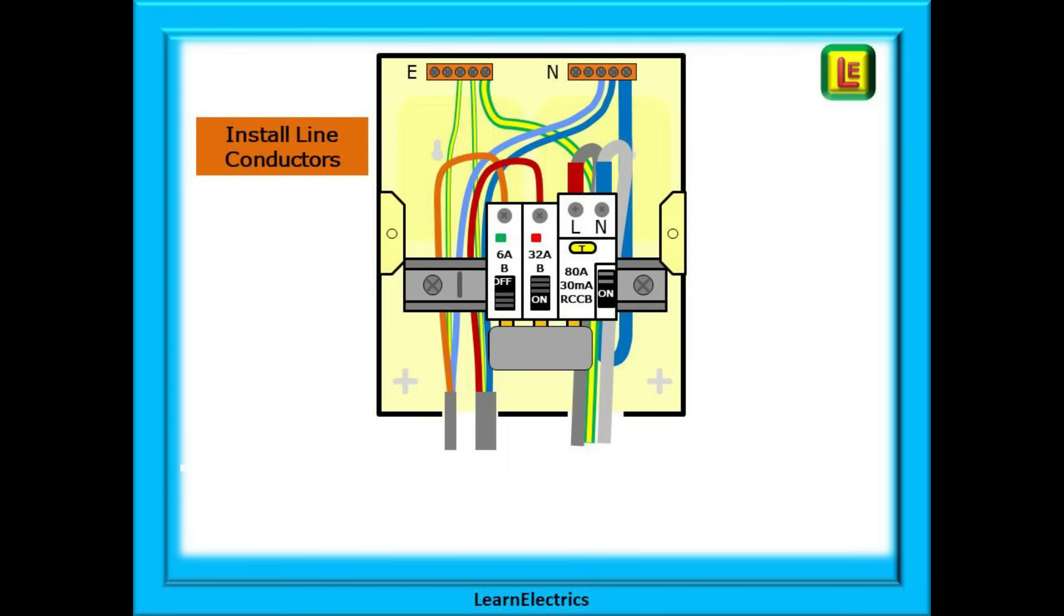Now install the live conductors. Following this method the brown line conductors will be at the front of the rest of the wiring making it easy to remove them when testing. Make sure all the cables are securely restrained and we can now carry out any necessary tests and move on to completing the installation at the house end.